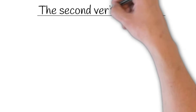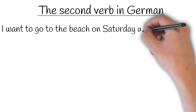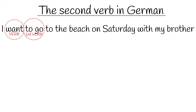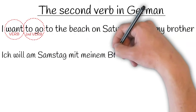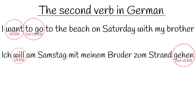But what happens to the second verb in German? If you recall, the second verb in English goes straight after the first verb: 'I want to go to the beach on Saturday with my brother' — 'want' is the first verb, and 'to go' the second verb, goes straight after it. However, in German something very different happens: 'Ich will am Samstag mit meinem Bruder zum Strand gehen.' Notice that the second verb comes right at the end of the sentence. This is very strange for us as native English speakers — 'I want on Saturday with my brother to the beach, go' — but it's very normal in German, and this is a pattern we need to get used to.